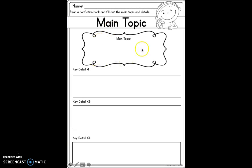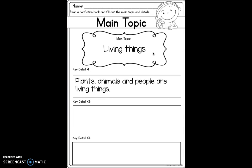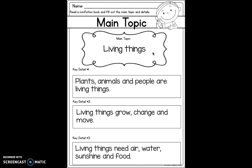Now I'm going to take what I learned and fill it in on my main topic and key detail organizer. This is where the main topic goes — the main topic of the text was living things, those were the words that kept repeating. My first detail: plants, animals, and people are living things. Second detail: living things grow, change, and move. And finally, living things need air, water, sunshine, and food. That's how I find the main topic and key details of a text.